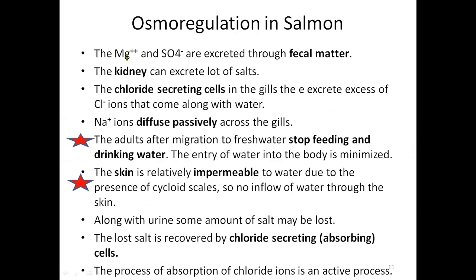When salmons are in seawater, magnesium ions and sulfate ions are excreted through fecal matter. Excessive salts present in the body are excreted through fecal matter and the kidneys also excrete a lot of salts. Whatever salts are present when in the hypertonic medium are excreted by the kidneys. The chloride-secreting cells also excrete sodium and chloride ions, with sodium ions diffusing passively out.